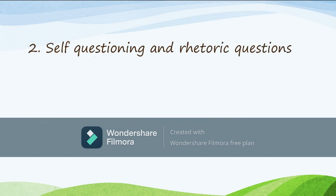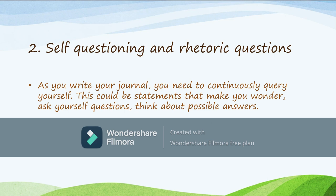Feature number two: a journal is self-questioning and contains rhetorical questions. As you write your journal, you need to continuously query yourself, question yourself. These could be statements that make you wonder — ask yourself questions and think about possible answers. This shows that you are self-reflecting on various events you are writing about. Self-questioning and rhetorical questions make your journal authentic, make it sound real, and make your audience feel they've been let into your thoughts and feelings.